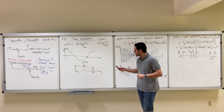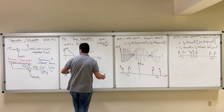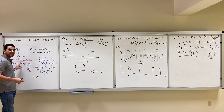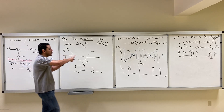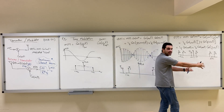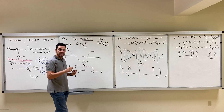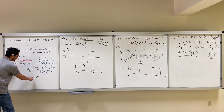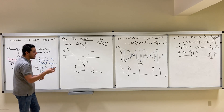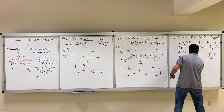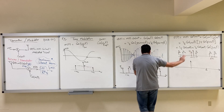We can also analyze the spectrum by looking at phi. We take the spectrum of phi and multiply it by cosine(omega_C t). When you multiply a signal by cosine(omega_C t), you shift it right, shift it left, and divide by two. So we shift the whole spectrum of phi right around omega_C, and shift the whole spectrum of phi left around negative omega_C, then divide by two.